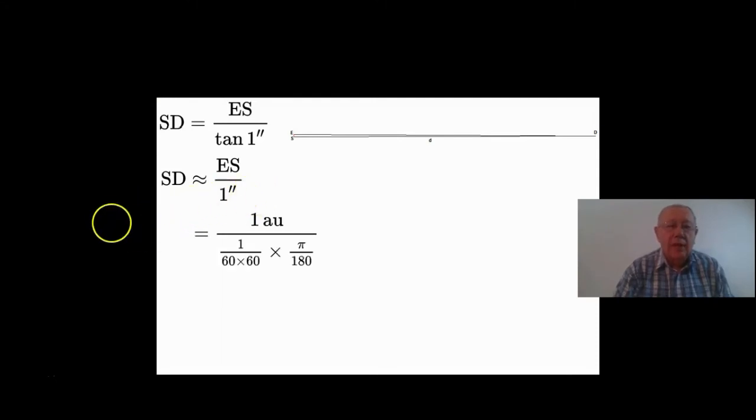So what we have then is 1 astronomical unit. So this is the astronomical unit there, and this is 1 arc second. Sorry, this is 1 arc second, and we're converting that to radians.